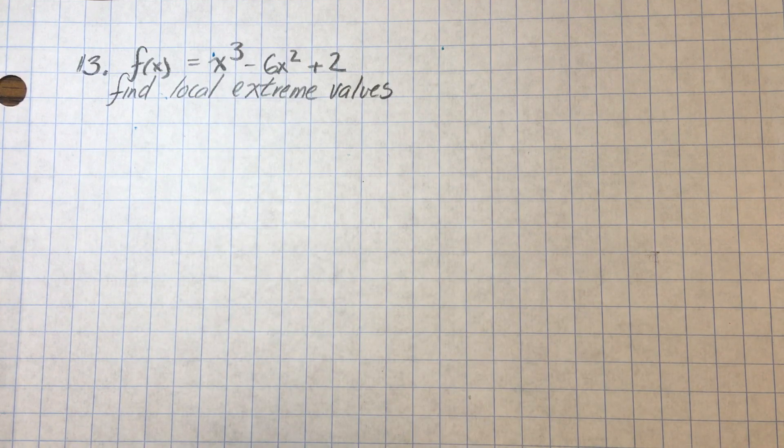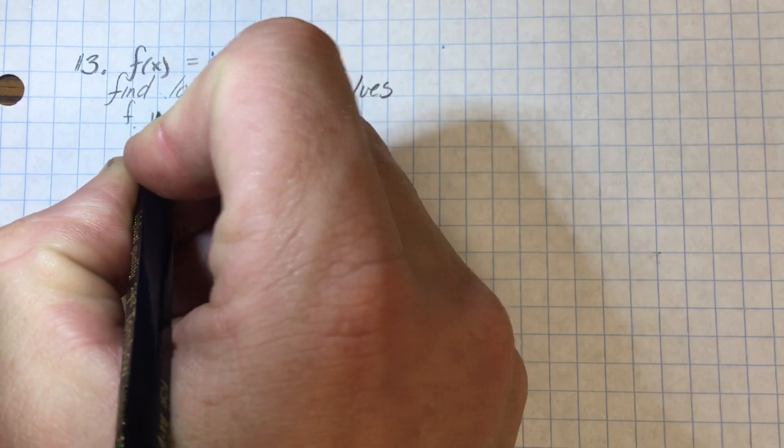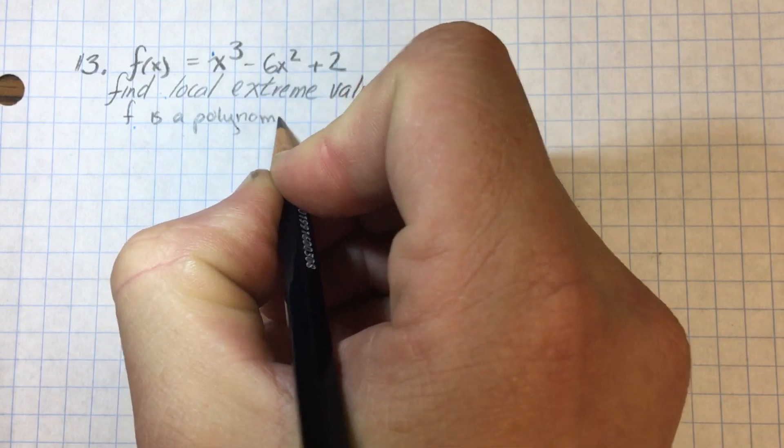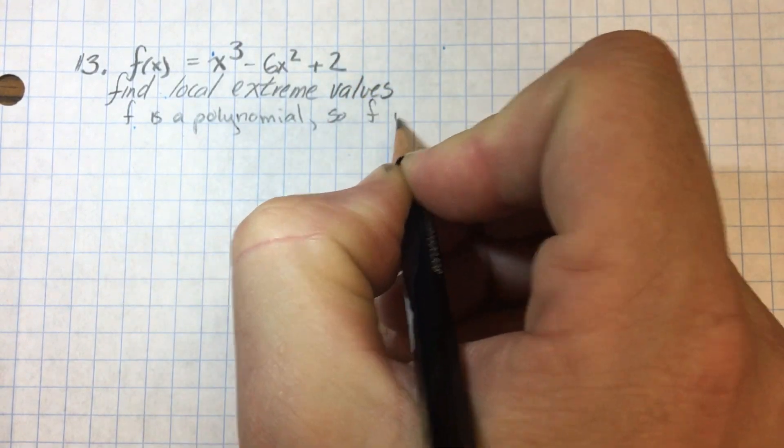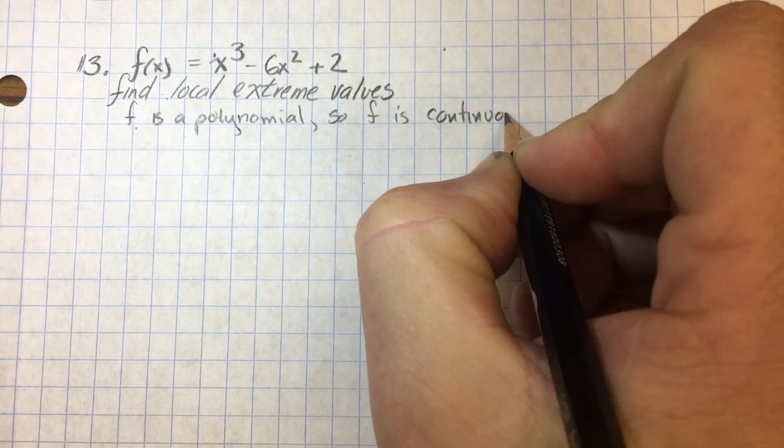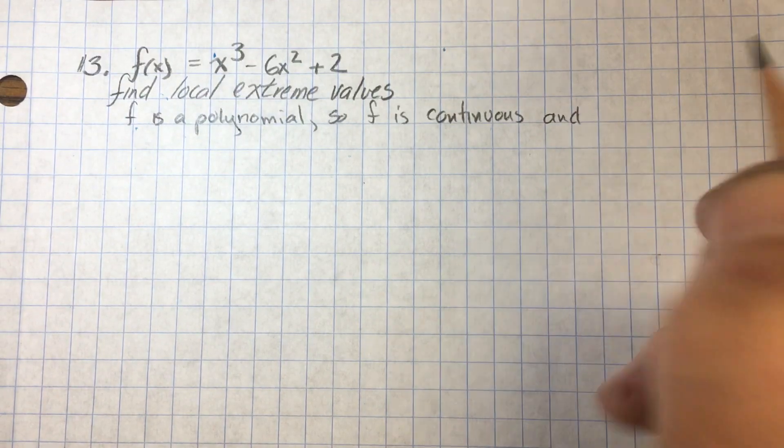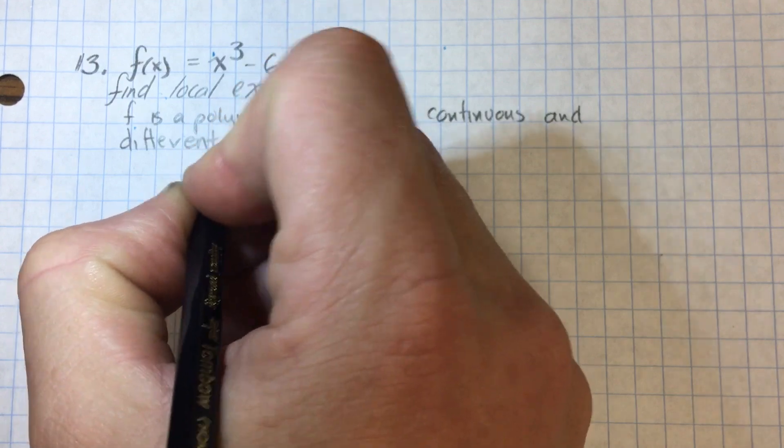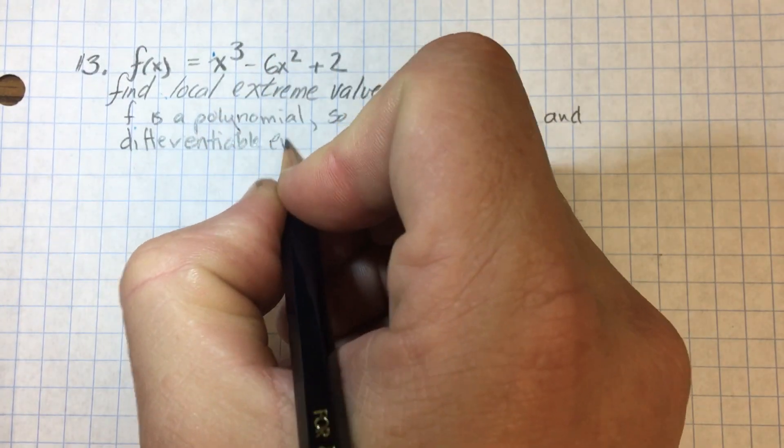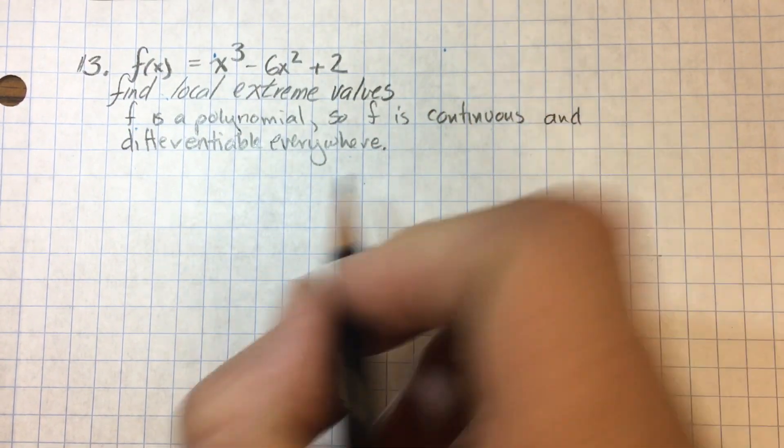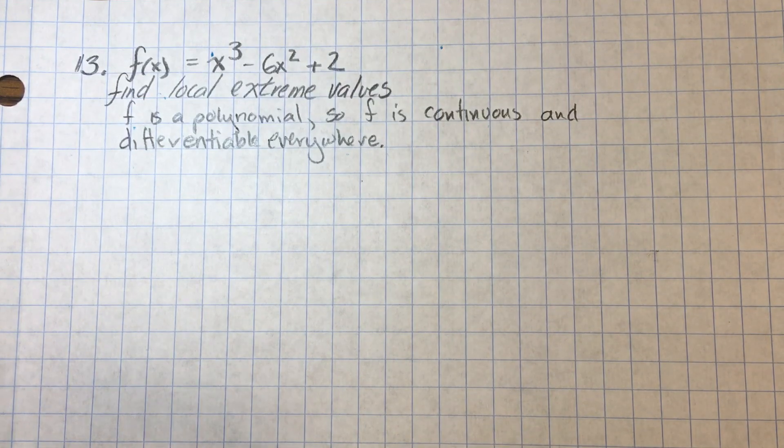Now I'm given a polynomial, and polynomials are continuous and differentiable everywhere, so I'm going to write that first. F is a polynomial, so F is continuous and differentiable everywhere. It's going to save me some time writing the differentiable part once I get to my critical values.